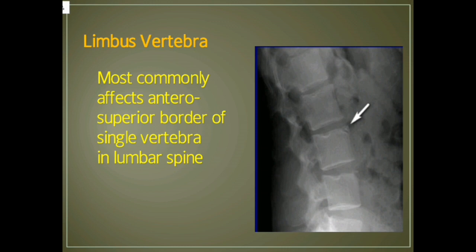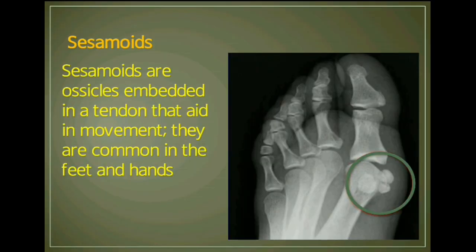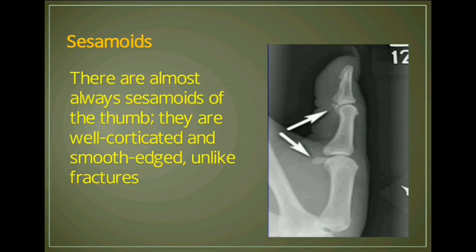Limbus vertebra most commonly affects the anterior superior border of a single vertebra in the lumbar spine. Sesamoids are ossicles embedded in a tendon that aid in movement; they are common in the feet and hands. For example, the sesamoids of the thumb are well corticated with smooth edges, unlike fractures.